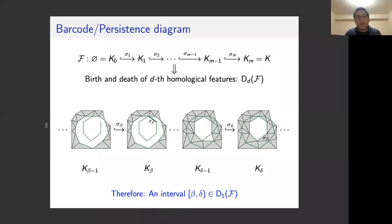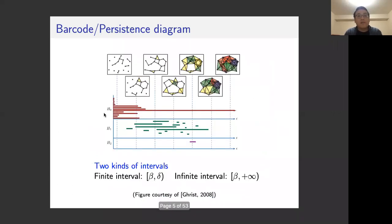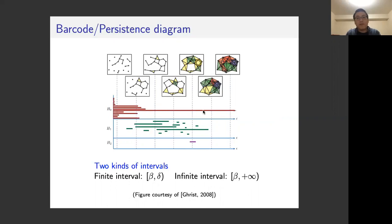Persistent homology gives you an interval from beta to delta. Since this feature is in dimension one, it is put into the first persistent diagram. If you gather all of these births and deaths of features, you get a whole persistent diagram. There are two kinds of interval in the persistent diagram: finite ones and infinite ones. A finite interval has a start and an end, but for an infinite interval, it starts somewhere but never ends. In this example, the long interval is the infinite interval and all of the others are finite ones.